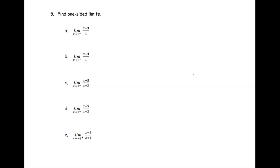For this example, we are going to find one-sided limits of the following function. In part a and part b, we have the same function x plus 3 over x. We look at the point 0 coming from the left side, coming from the right side.